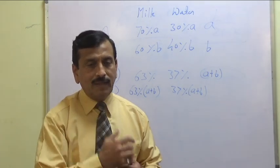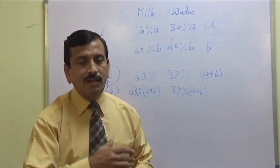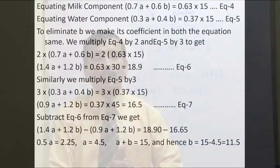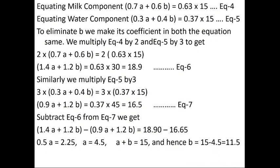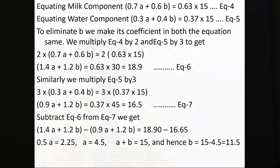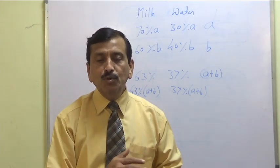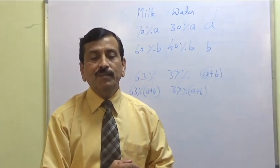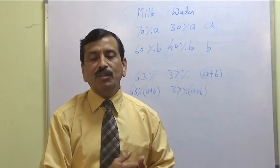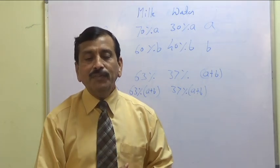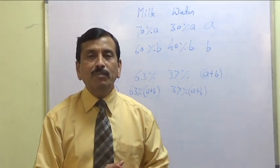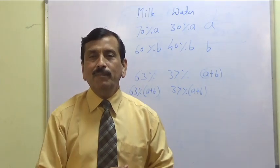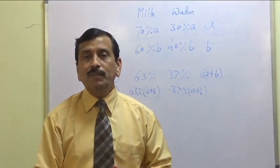Equating equations 4 and 5, we eliminate B by multiplying equation 4 by 2 and equation 5 by 3, so their coefficients of B become 1.2 each. Subtracting one equation from the other gives the value of A. Substituting this into any one equation gives the value of B. Thus we are able to solve the simultaneous equations. Thank you.